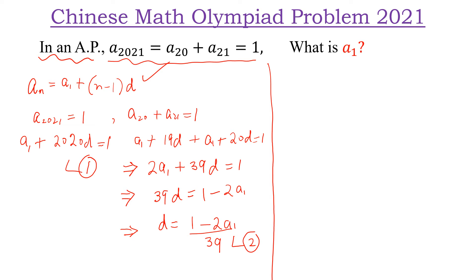Now, we put the value of D in equation 1. So, we can write A₁ plus 2020 into (1 minus 2A₁) divided by 39 is equal to 1. Multiplying both sides by 39, we can write 39A₁ plus 2020 minus 4040A₁ is equal to 39.